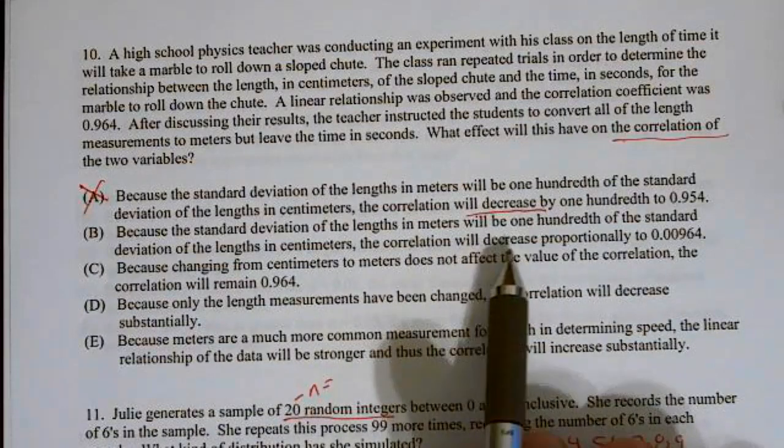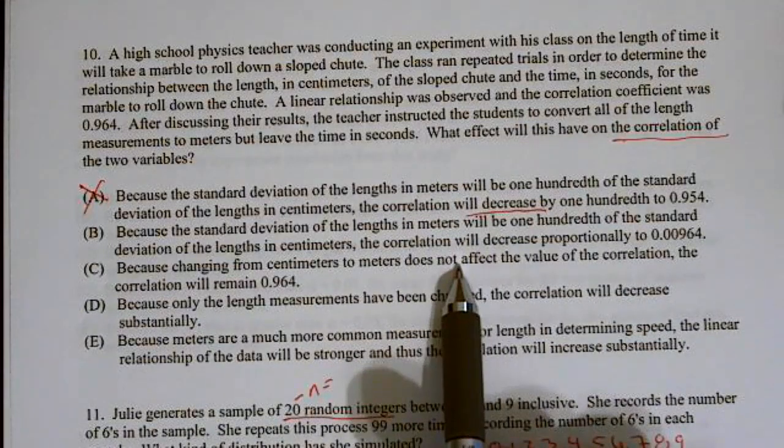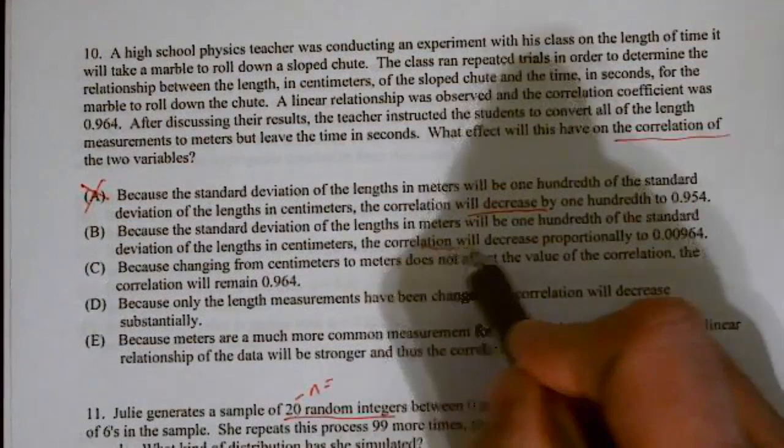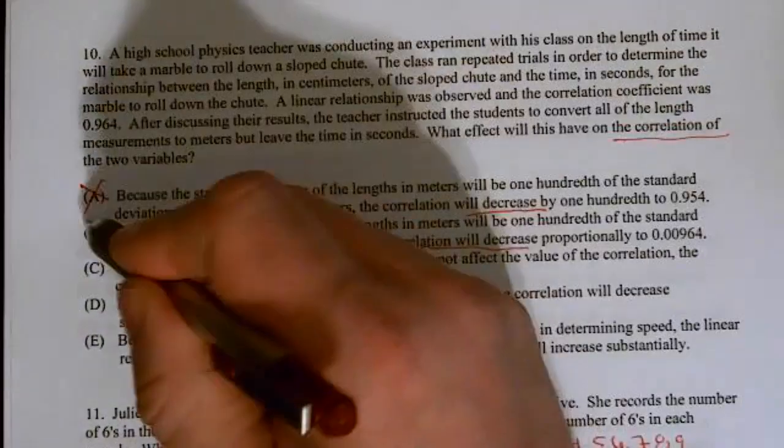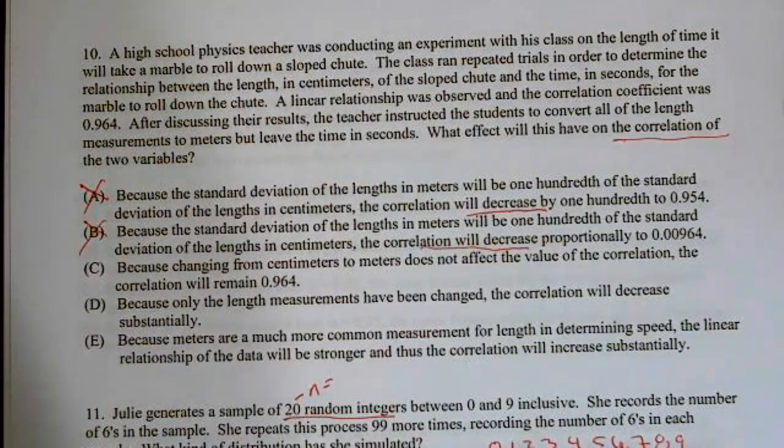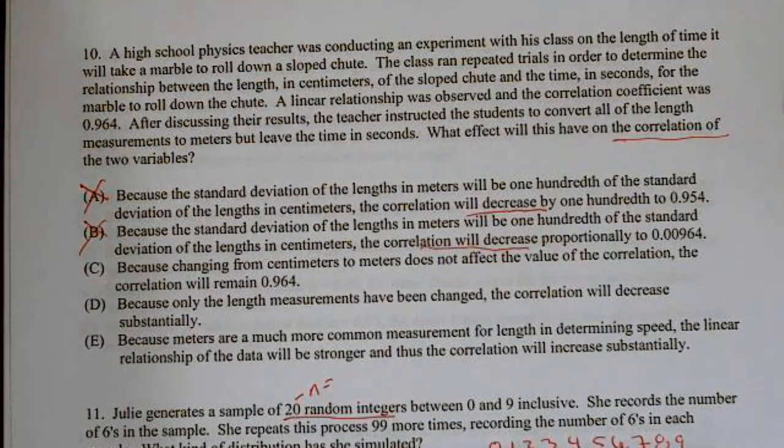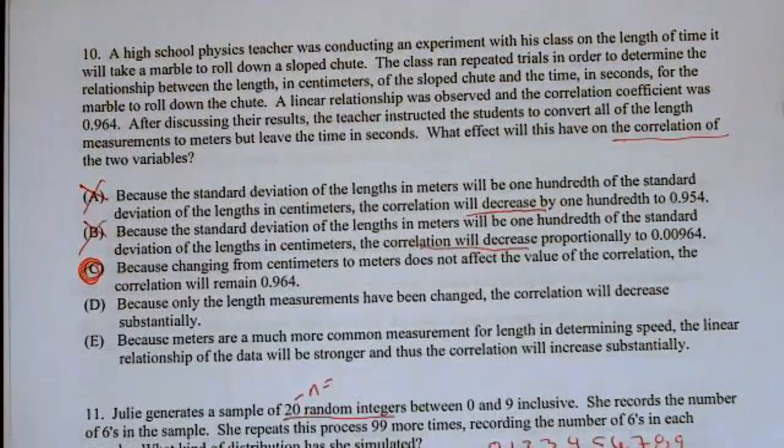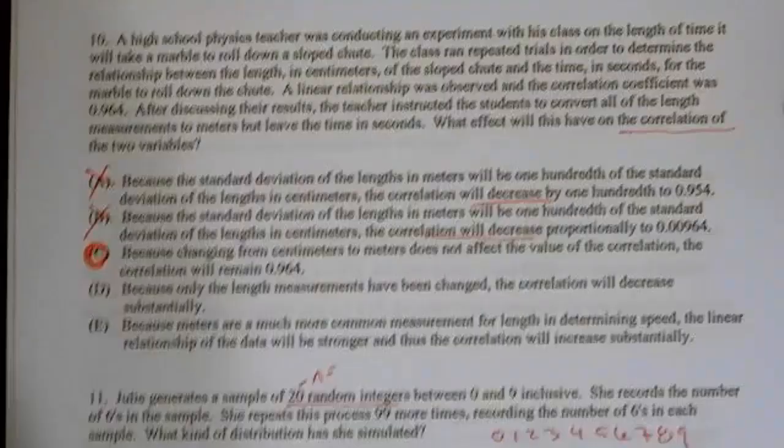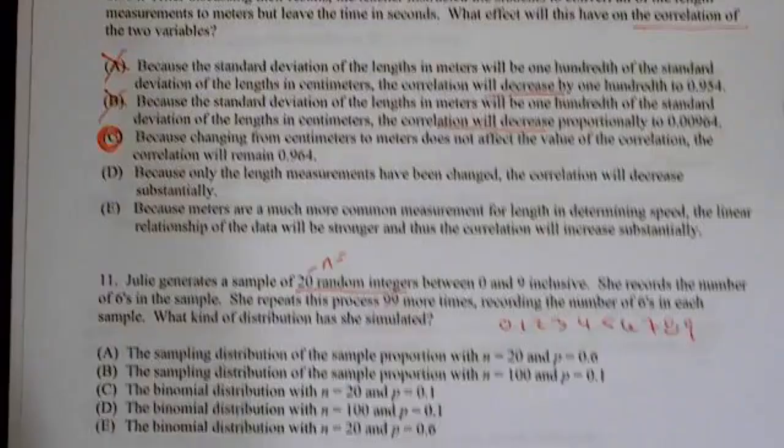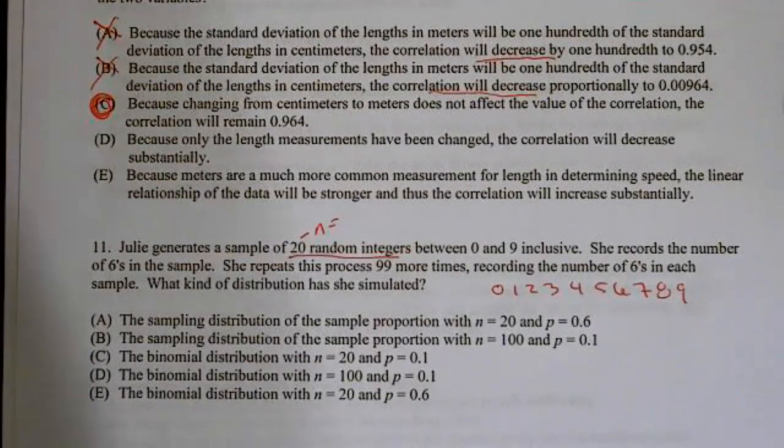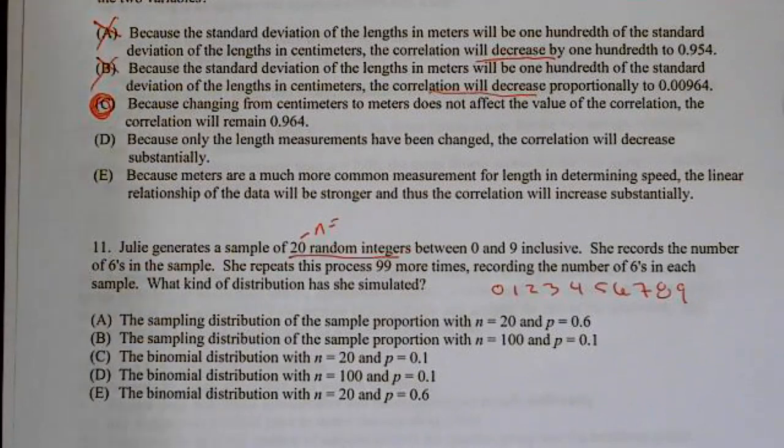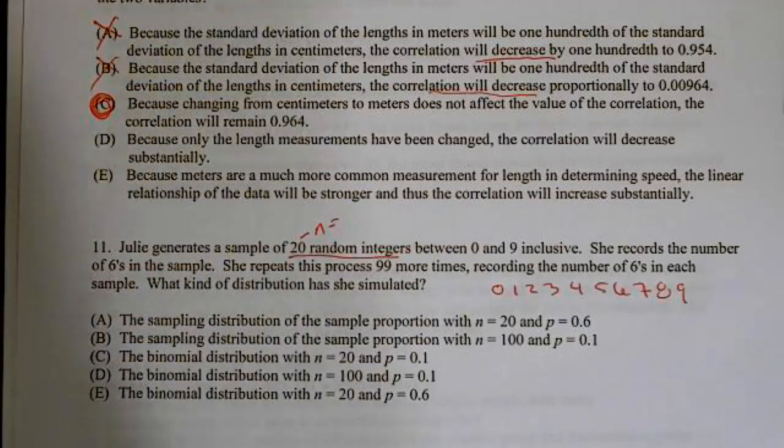Because changing centimeters to meters does not affect the value of the correlation, the correlation will remain 0.964, and we have a winner. So the answer to number 10 is C. Once again, correlation will not be impacted by changing the values by adding constants or multiplying by a constant. In this case, we were dividing by a constant and it won't change things. The relationship will be the same.